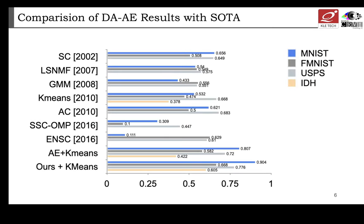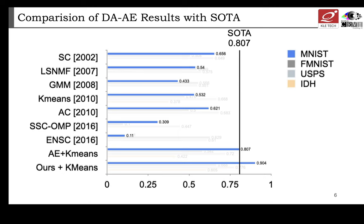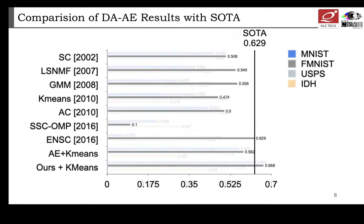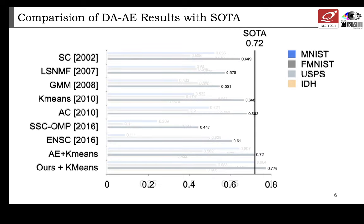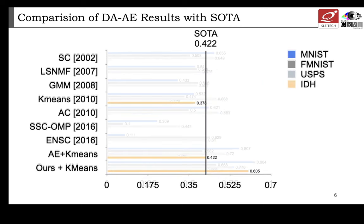We also compare the clustering accuracy of the proposed model with state-of-the-art methods. In the MNIST dataset, there is an increase of 10% accuracy. For Fashion MNIST dataset, there is approximately 4% increase. In USPS dataset, there is approximately 5% increase. And for CIFAR-10, there is an 18% increase over state-of-the-art models.